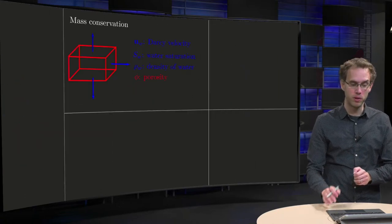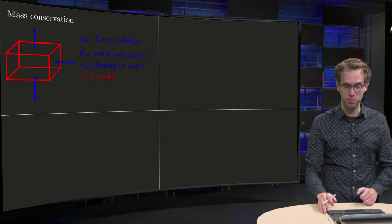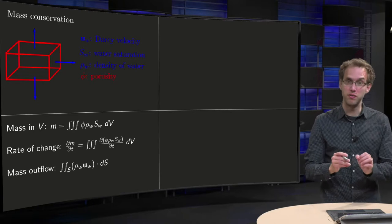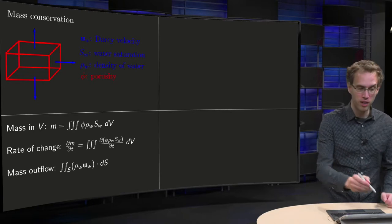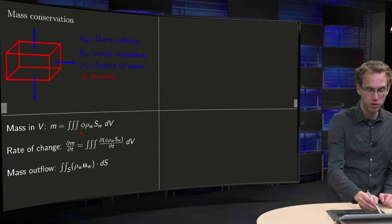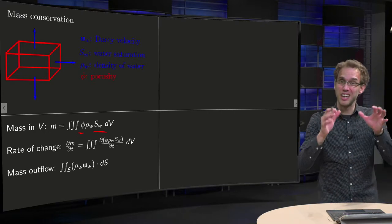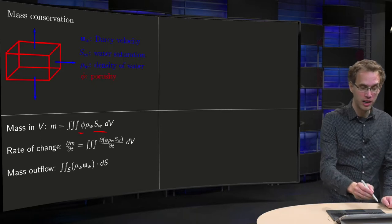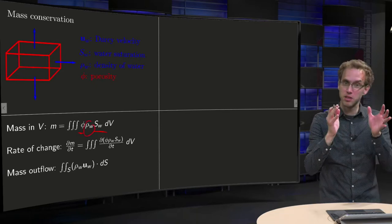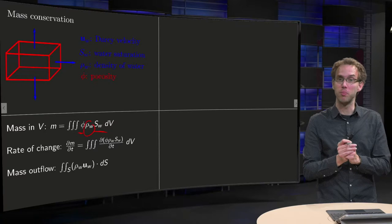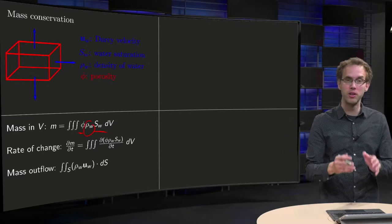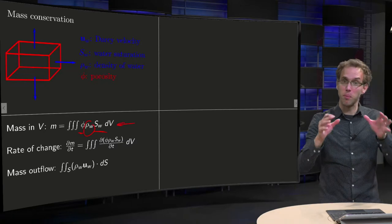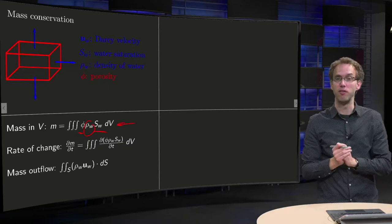Now let's see what happens if we write down the mass balance. What's the total amount of mass of water in the region V? How much space do we have? We have porosity times SW, that's the fraction of total space available for water. So what's our mass? That's its fraction times density of water in kg per cubic meter times volume. So we have to integrate with respect to the volume. That's our total mass inside our volume V.